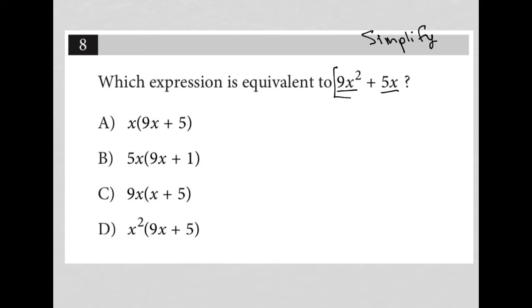There's nothing I can simplify in the question, but I can definitely simplify all of these answer choices. So I know that through simplification of the answer choice, what I want to equal is this 9x squared plus 5x.